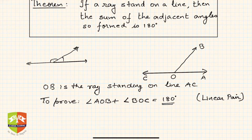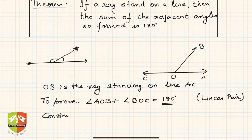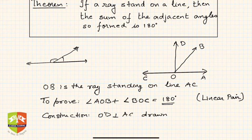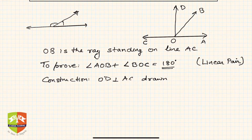A right angle is an angle which measures 90 degrees. So what we do is some construction: OD perpendicular to AC is drawn. OD is perpendicular to AC. Now what can we say about this construction?